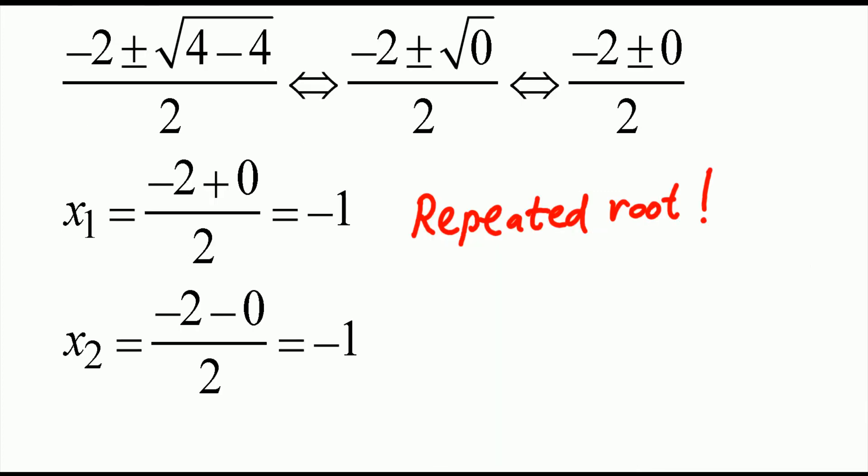So we see that our solutions are negative 2 plus 0 divided by 2, and that is negative 1, and negative 2 minus 0 divided by 2, and that is also negative 1. So we call this repeated root. We have the same solution.